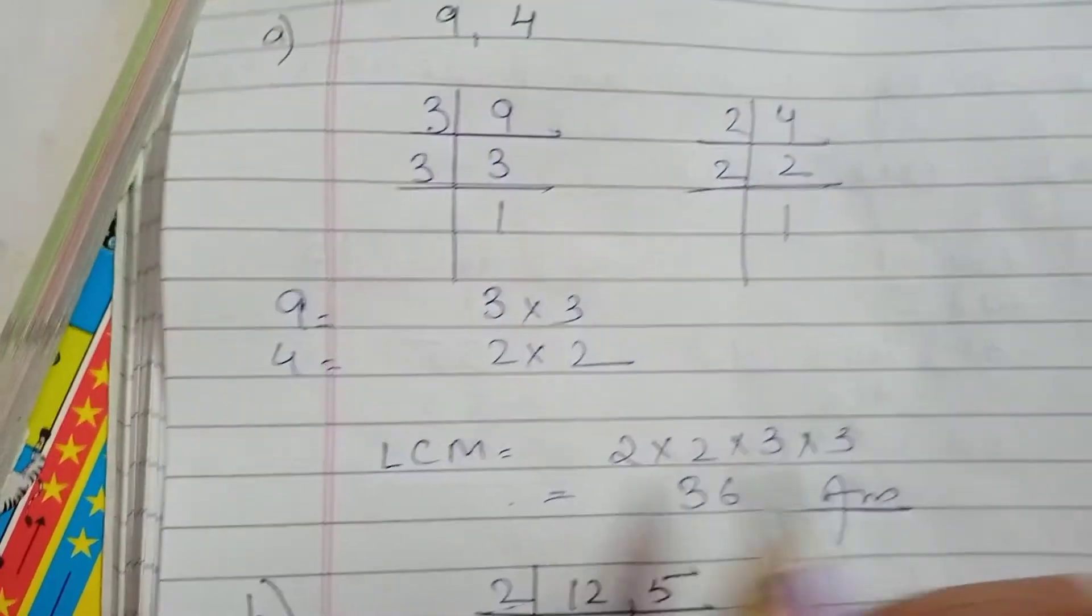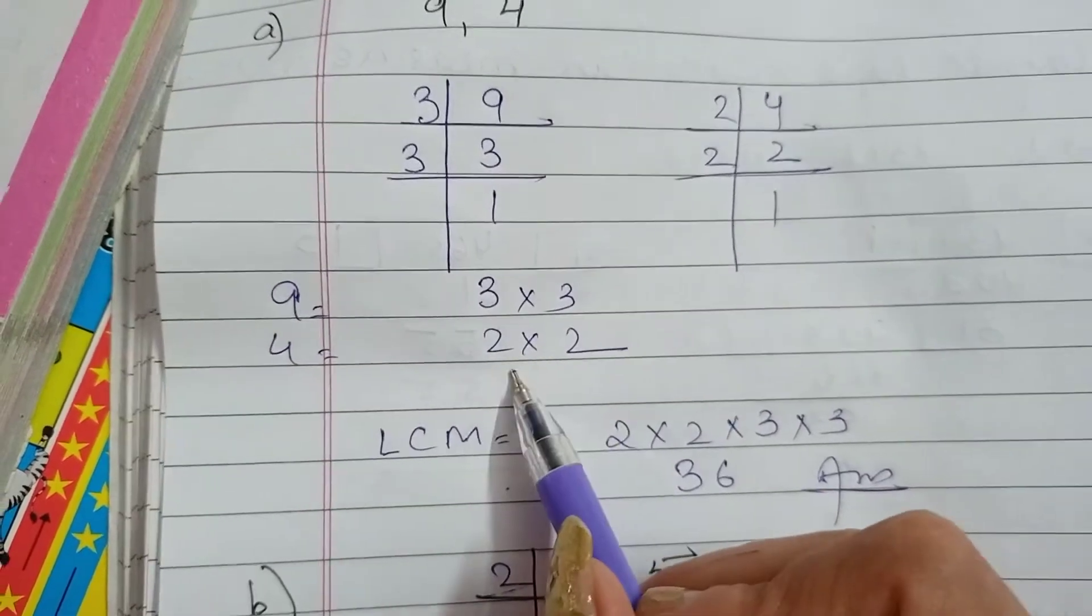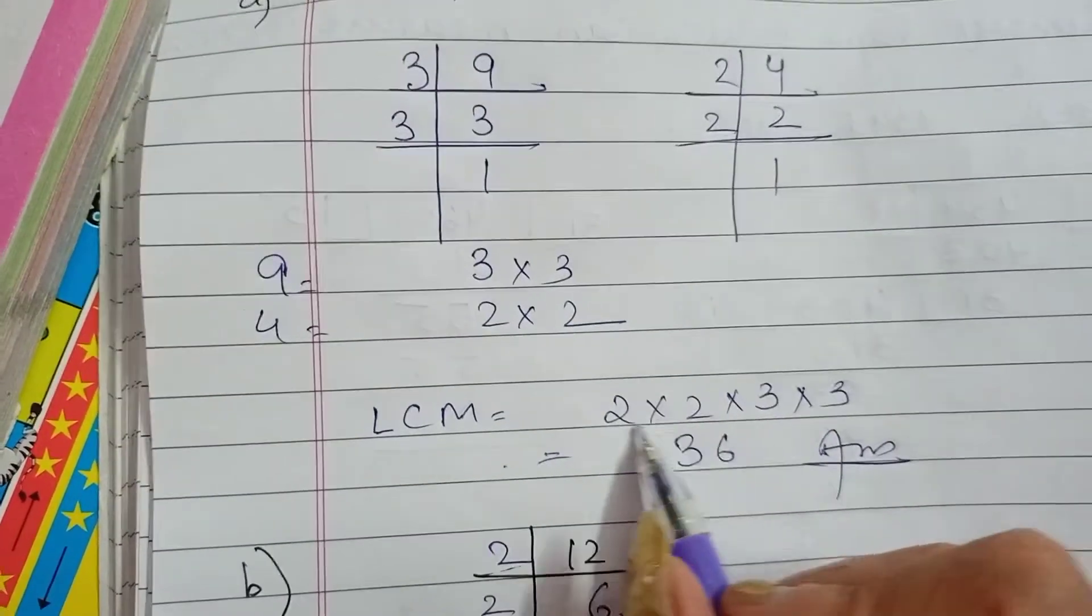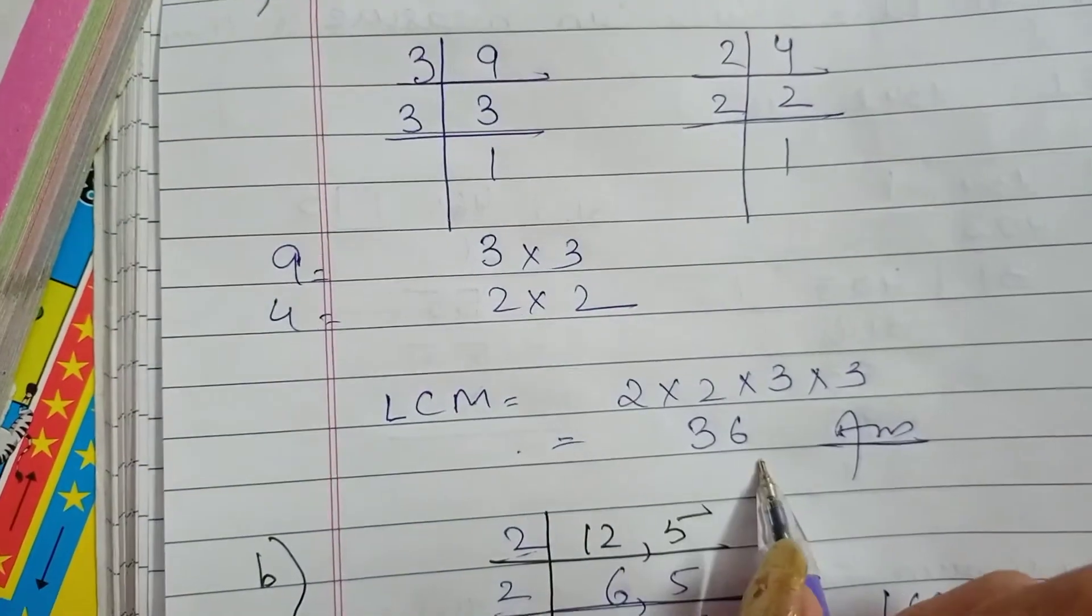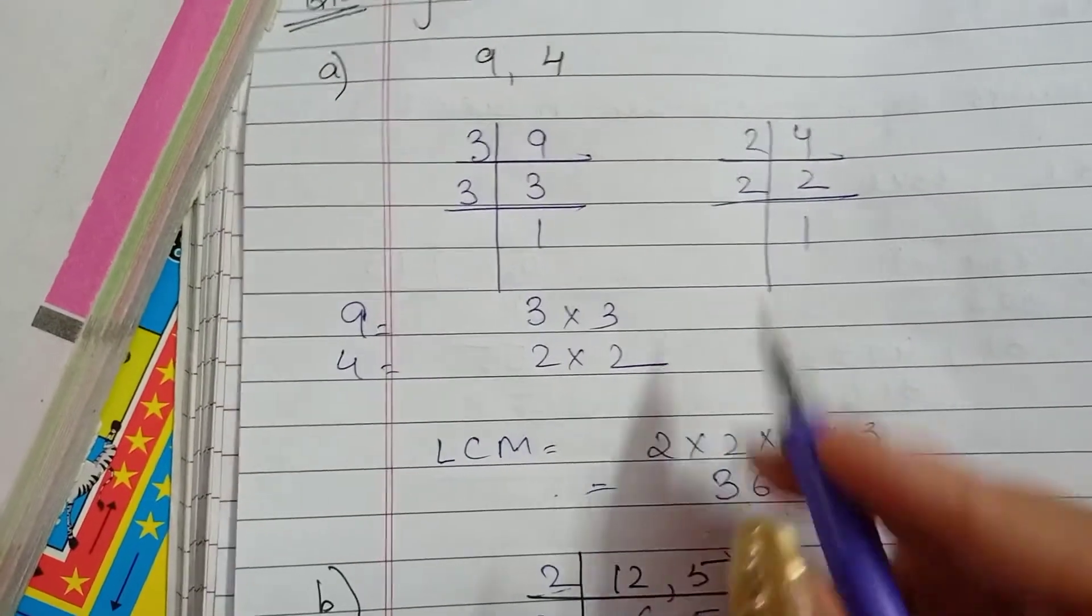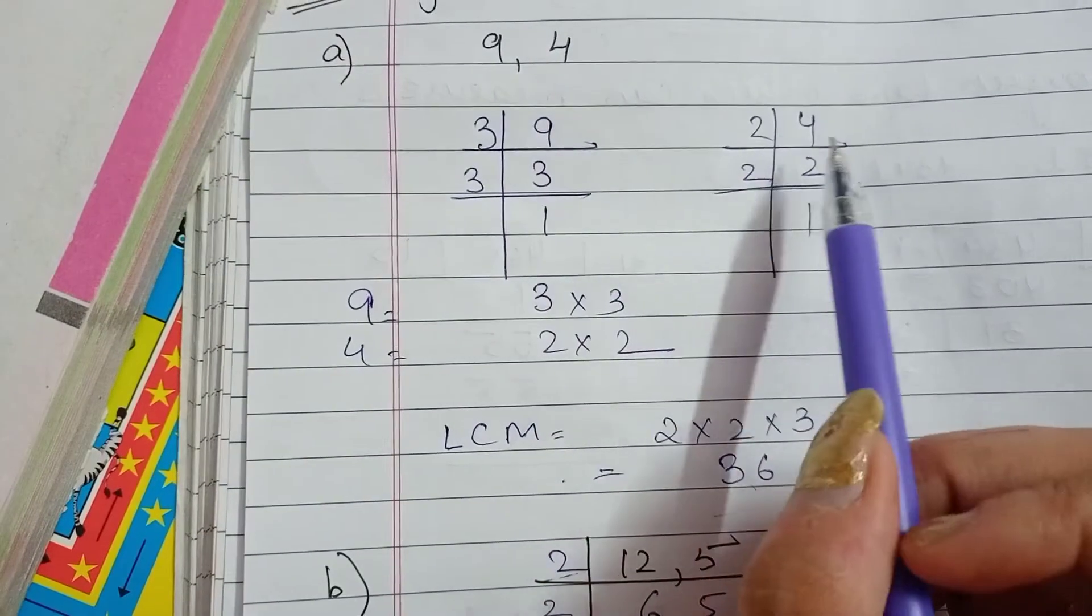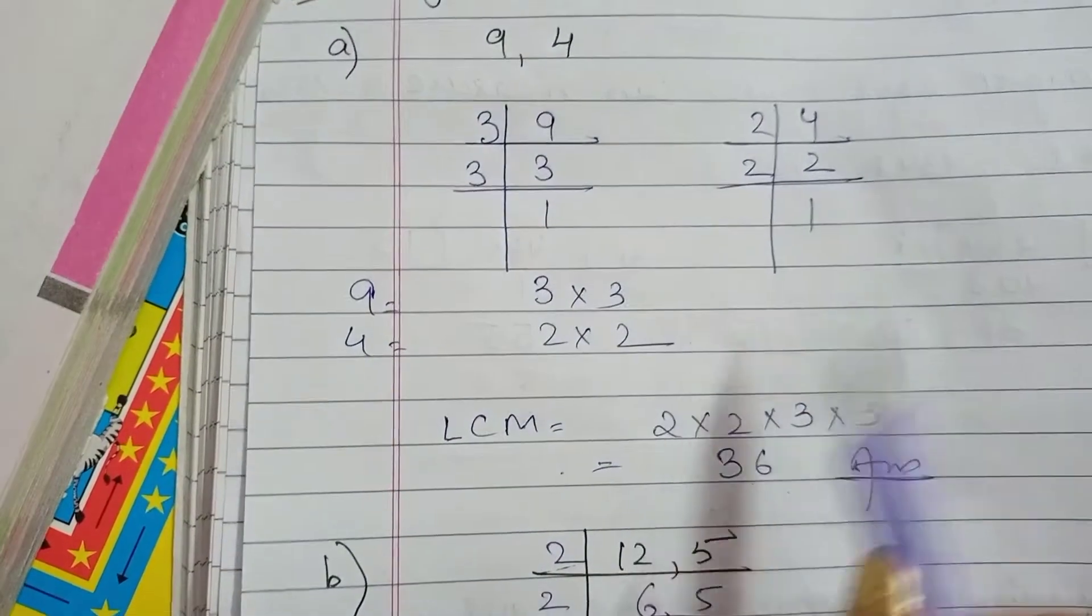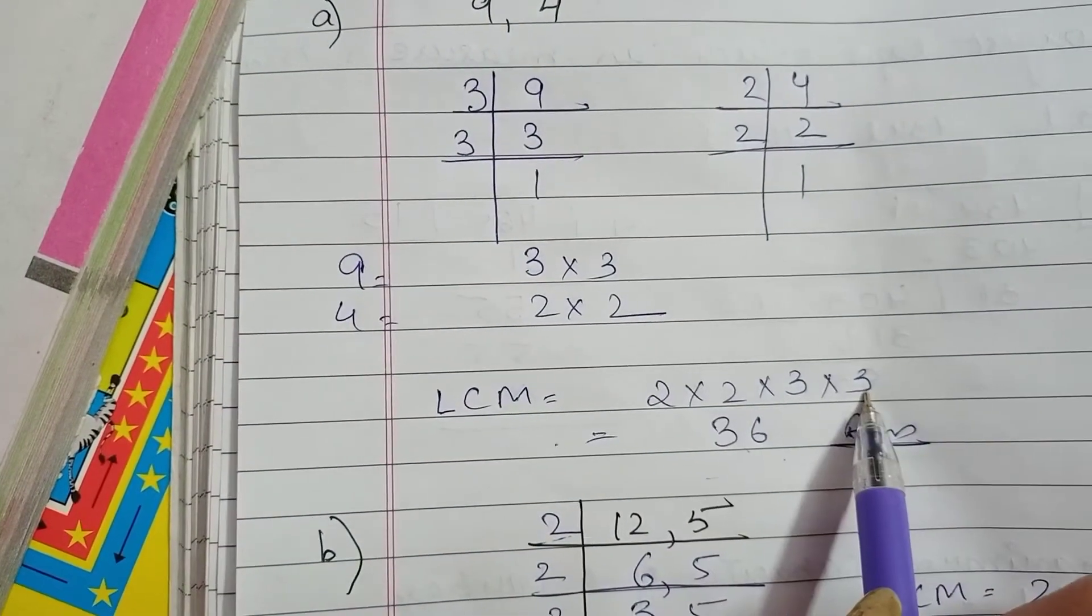What can we do? For LCM, if any number is not common we just arrange all the numbers together and we get our answer. So 36 is the lowest common multiple which can easily be divisible by 9 and 4. We will multiply all 4 pairs together.